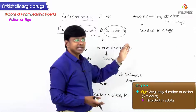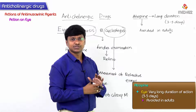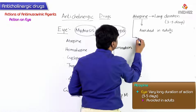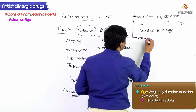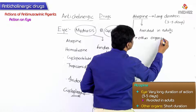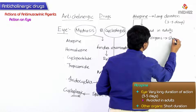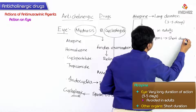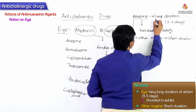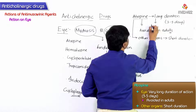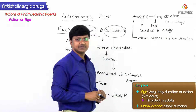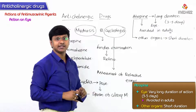In other organs, atropine has a short duration of action, whereas within the eye it has a longer duration of action. That is the reason why atropine is avoided in adults for ophthalmic use.